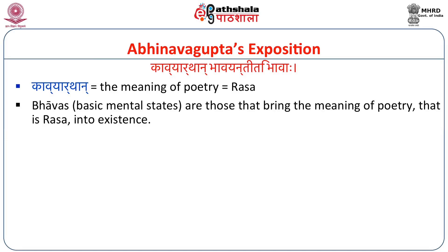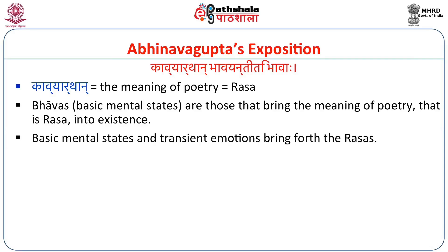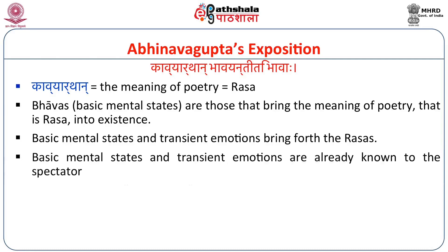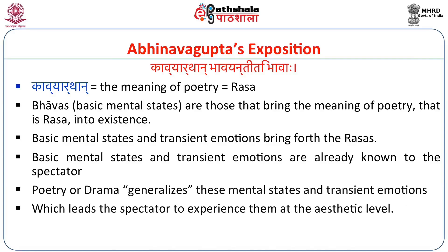He says: Kavyarthan Bhavayanthiti Bhavaha — what are Bhavas? They bring out the meaning of poetry. Bhavas, the mental states, are those that bring the meaning of poetry — that is Rasa — into existence. He says there are basic mental states and transient emotions, which bring forth the various Rasas. These basic mental states and transient emotions are already known to the spectator — they are called Vasana. The poetry or drama generalizes these mental states and transient emotions, which leads the spectator to experience them at the aesthetic level. That is, the Shoka of Sita becomes the Shoka of everybody.